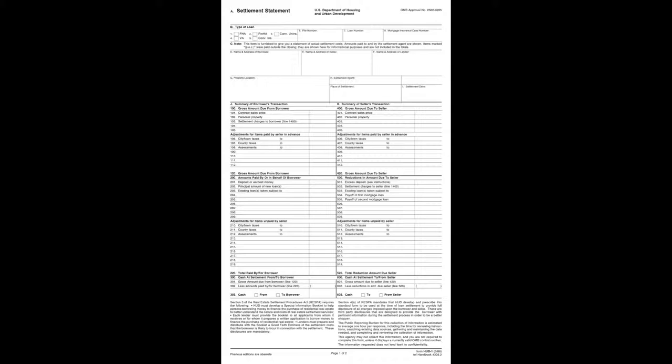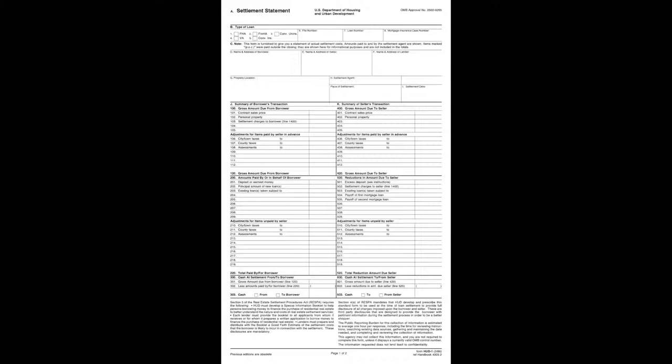We'll go down to the 1200 section for recording. You will be paying state deed tax based on the sales price. In Ramsey and Hennepin County it's $3.40 per thousand, and in the other counties it's $3.30. We'll collect any recording fees for mortgages that we're going to have to satisfy — that's a $46 recording fee per document — and we'll also charge a $5 conservation fee that goes into the DNR.